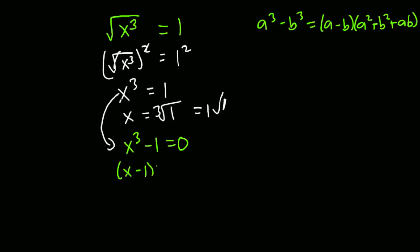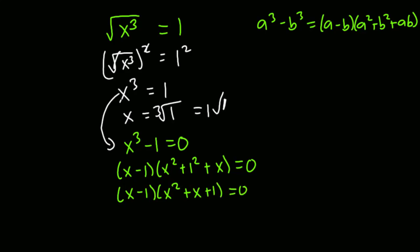Applying the difference of cubes, we get x minus 1, multiplied by x squared plus 1 squared plus x times 1, which simplifies to x minus 1 times x squared plus x plus 1, all equal to 0.